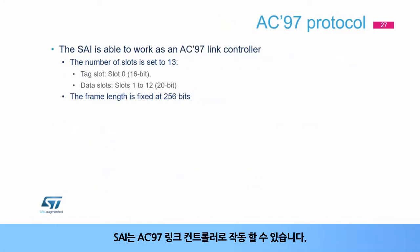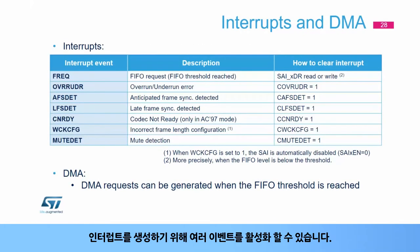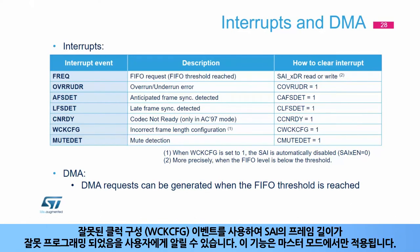The SAI is able to work as an AC97 link controller. When this protocol is used, the frame length, the slot number, and slot length are set by the hardware. Several events can be enabled in order to generate interrupts. The wrong clock configuration (WCKCFG) event can be used to inform the user that the frame length of the SAI has been improperly programmed. This feature is relevant only in master mode.